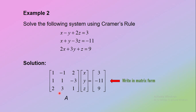Here is matrix A. A is obtained from the coefficients of variables X, Y, and Z of the linear equations. And this is the variable matrix X equals matrix B, the non-homogeneous matrix.